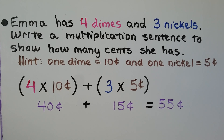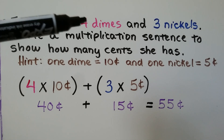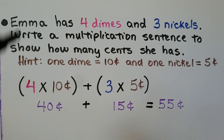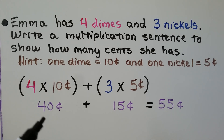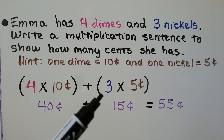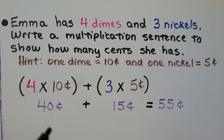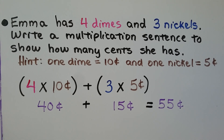Emma has four dimes and three nickels. Write a multiplication sentence to show how many cents she has. Remember, one dime is equal to 10 cents, and one nickel is equal to five cents. If she has four dimes, that means she has four tens. And if she has three nickels, that means she has three fives. We have four times 10 cents, that's 40 cents, plus three times five cents, that's 15 cents. 40 cents plus 15 cents is equal to 55 cents — we know Emma has 55 cents.